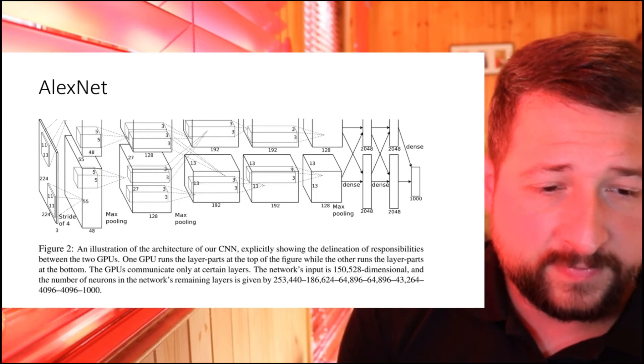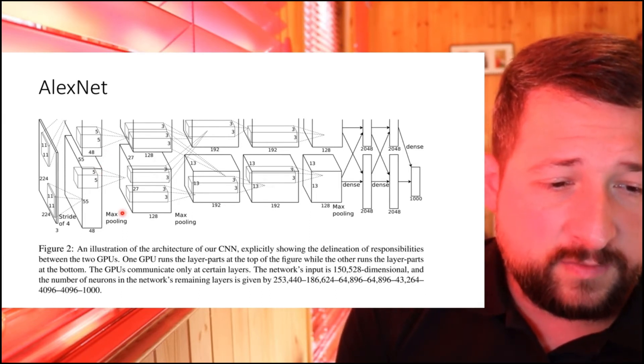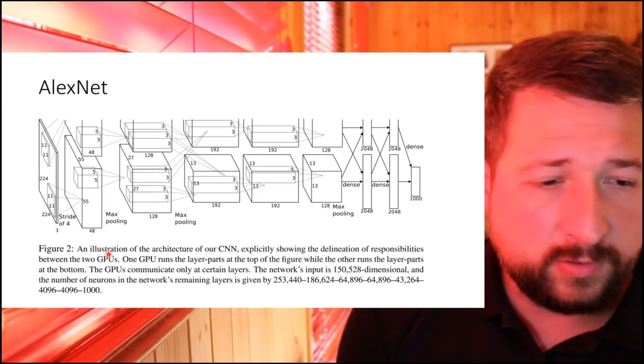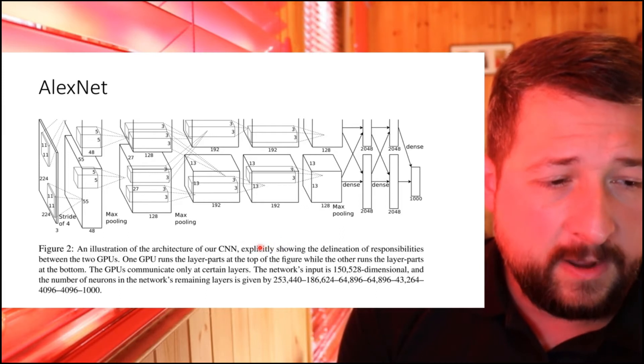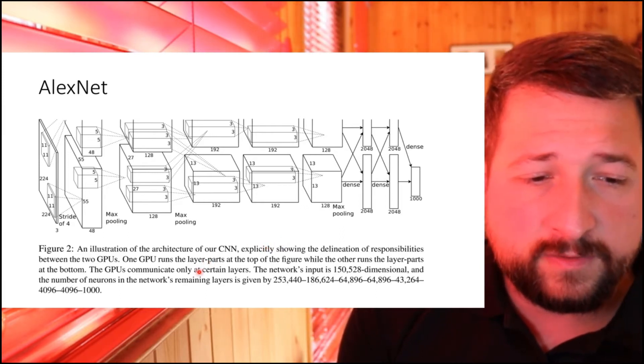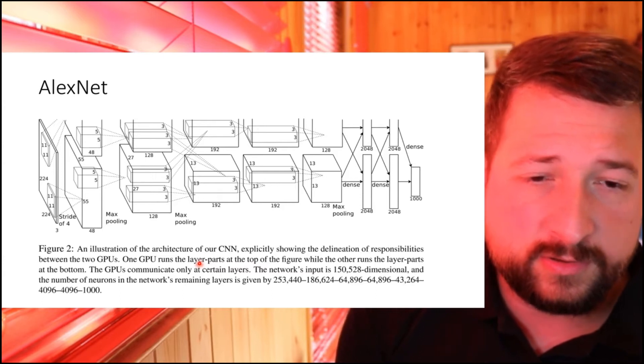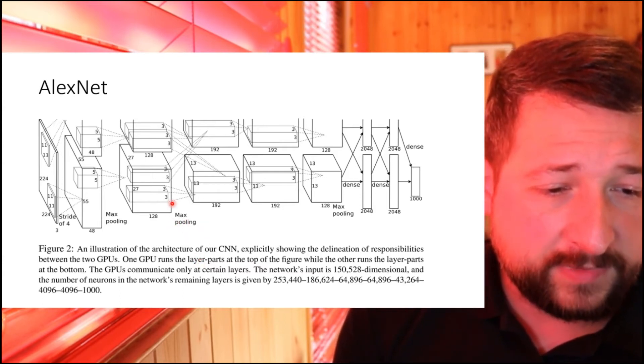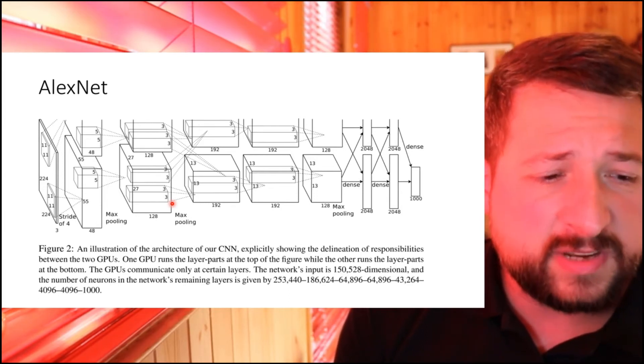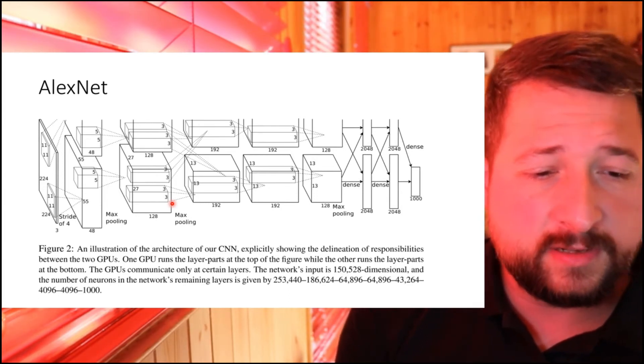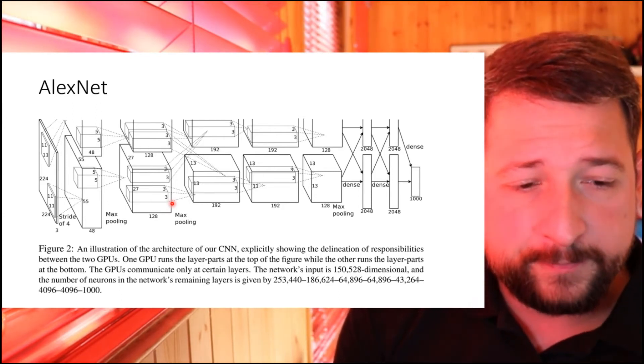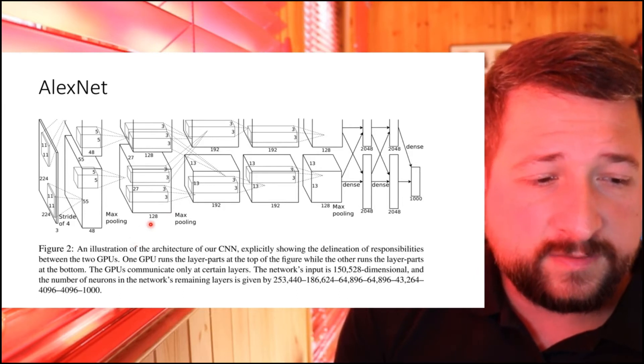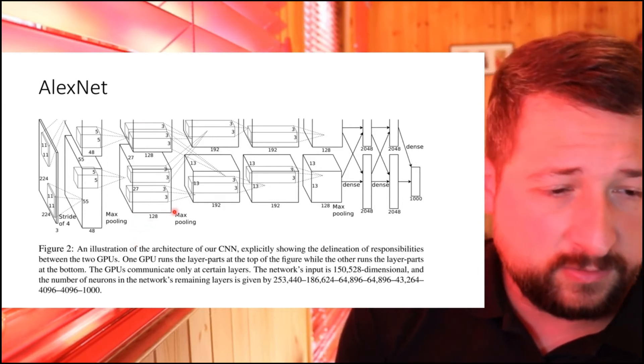What happens is that for most of these layers, for example convolutional layer 1, 2, 4, and 5, the connections are only with feature maps on the same GPU. So you continue convolving with the same feature maps. You would take as input half of the feature maps that were on the same GPU as before, and you look at the full 96 feature maps, for example, when you then continue to convolve.